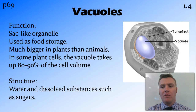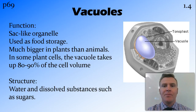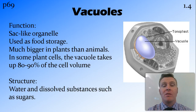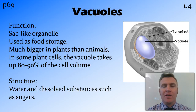A vacuole is a sac that's inside a cell, and it holds generally food storage, so it'll have dissolved sugars and things like that. The difference here is that in plant cells the vacuoles are very, very big, while in animal cells the vacuoles are much smaller. So in an animal cell you might not see the vacuole, whereas in a plant cell they're quite obvious.